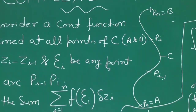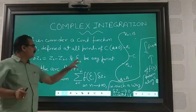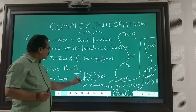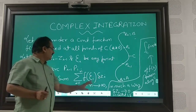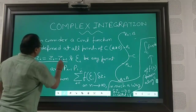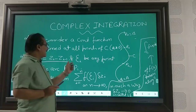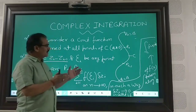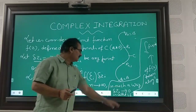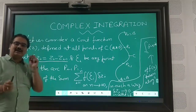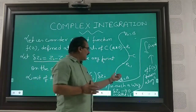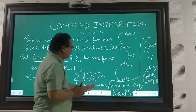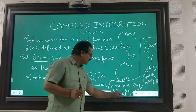It means on the sub-arc from pᵢ₋₁ to pᵢ, the limit of the sum may be defined — this is already a well-known term in calculus. The summation from i=1 to n of f(ξᵢ)Δzᵢ, where Δzᵢ is defined as zᵢ minus zᵢ₋₁, and ξᵢ is any point on the curve. When n tends to infinity, this means Δzᵢ tends to 0, indicating the points on the curve are in a neighborhood — their arc length becomes very, very small. As a limiting case, even as Δzᵢ tends to 0, this is called a line integral.